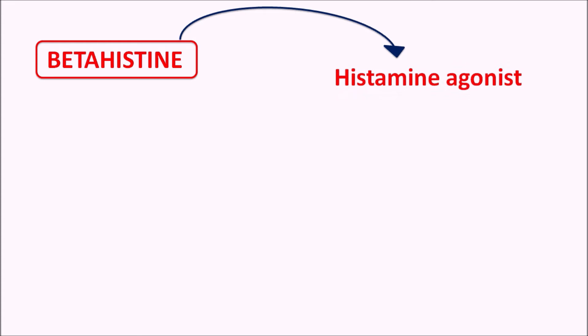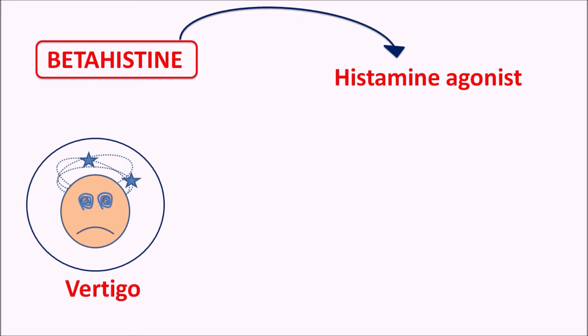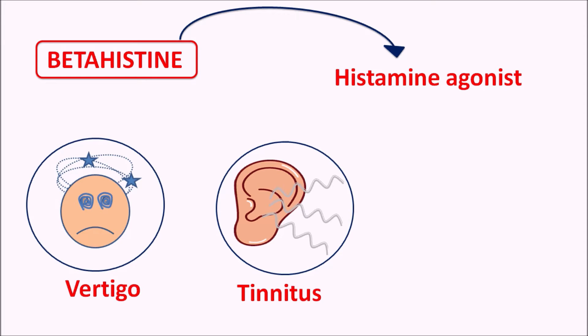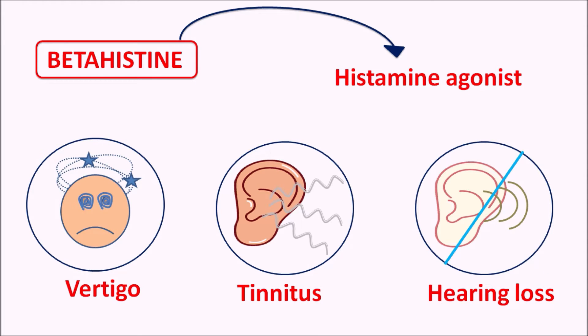Today in this video we are going to discuss about betahistine. The suffix 'histine' indicates this drug is a synthetic analog of histamine, and this drug acts as a histamine receptor agonist. So simply, betahistine is a histamine analog and this drug is indicated for the treatment of various conditions such as vertigo, where there is a reeling sensation, tinnitus, some budging noise in the ears, and hearing loss. All these symptoms can be managed by betahistine, which is a histamine agonist.